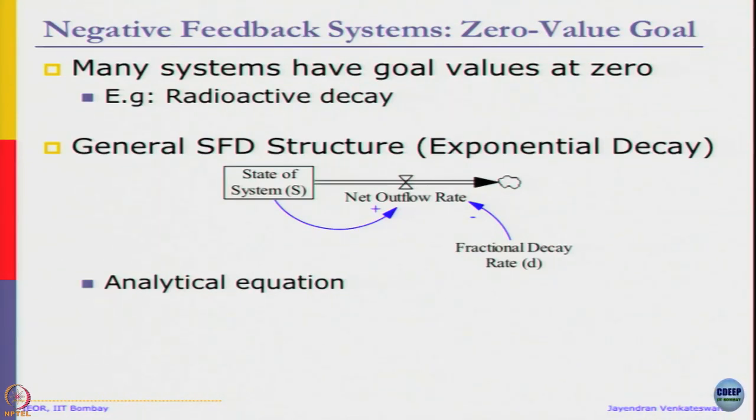We have state of system S, net outflow rate is simply S times the fractional decay rate. So your change in stock or net outflow rate is just stock times D. You do not need to subtract with the zero.